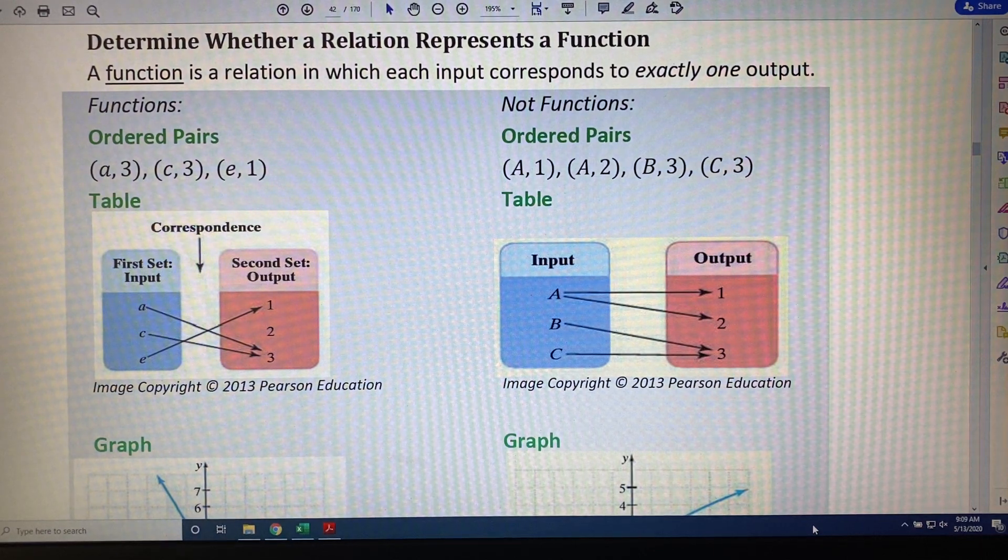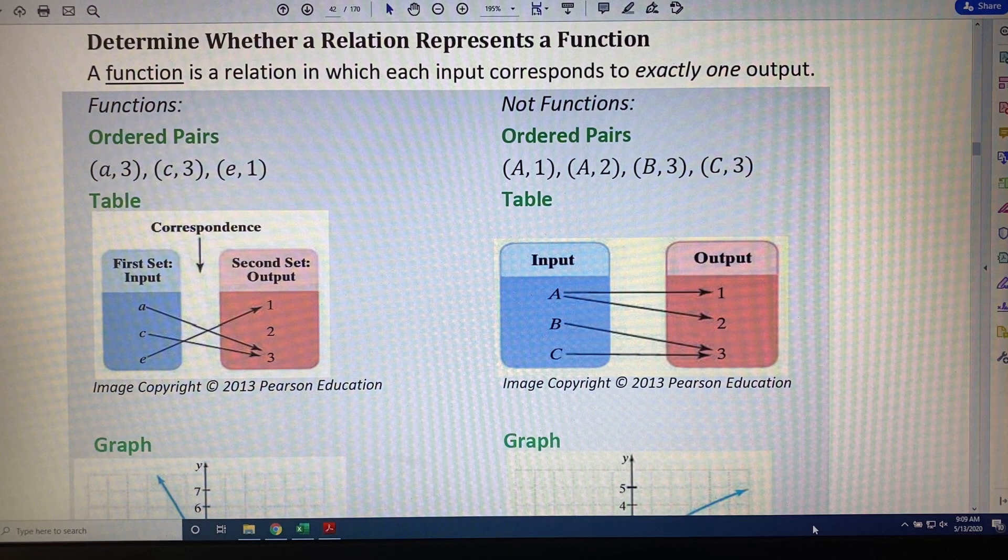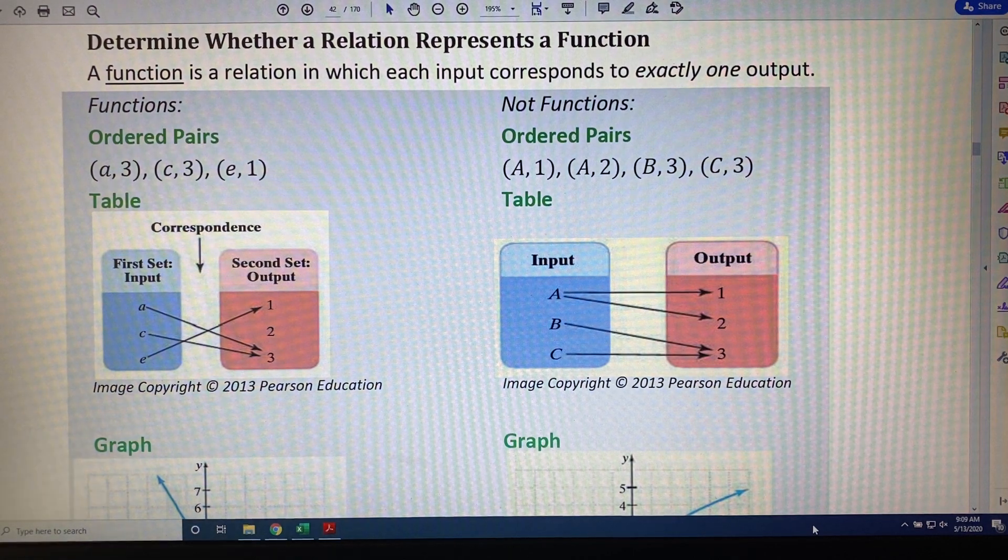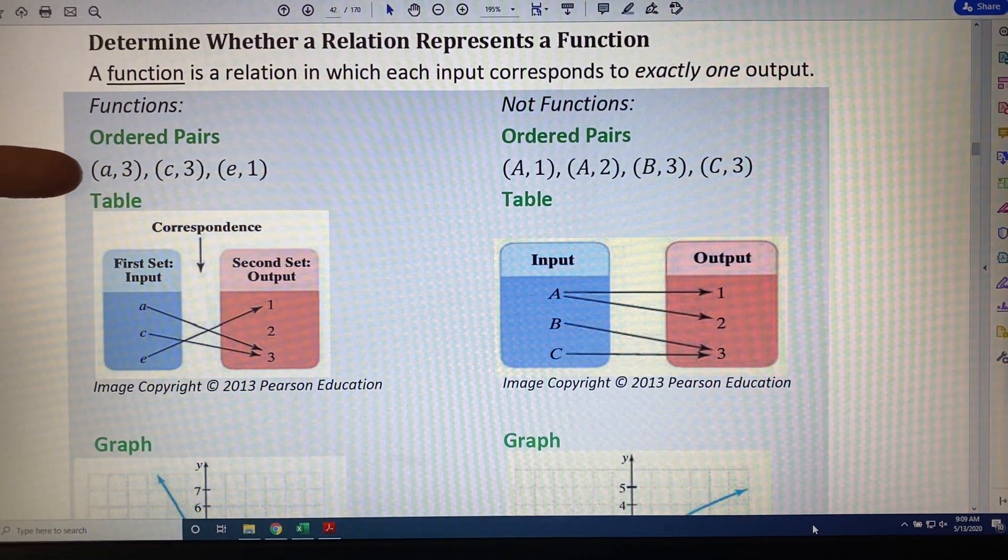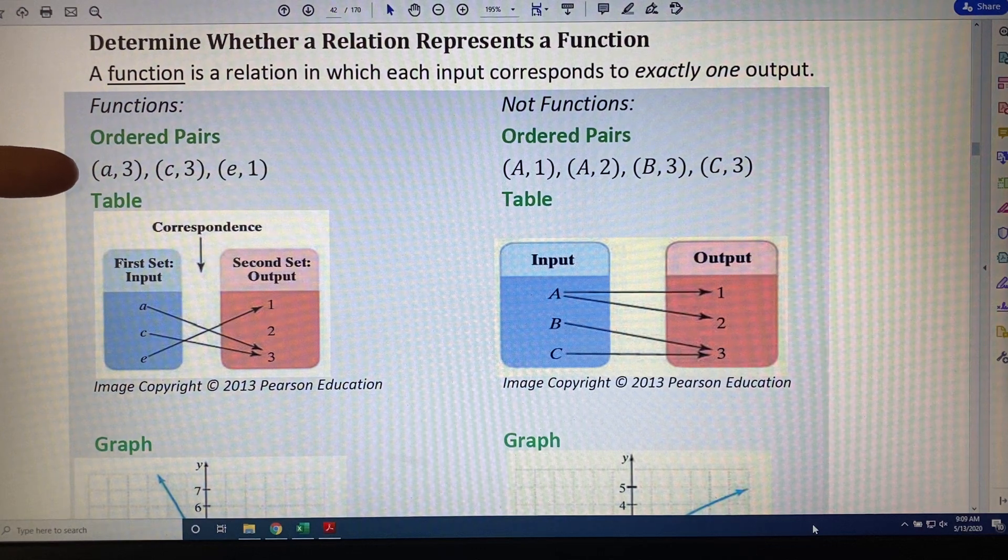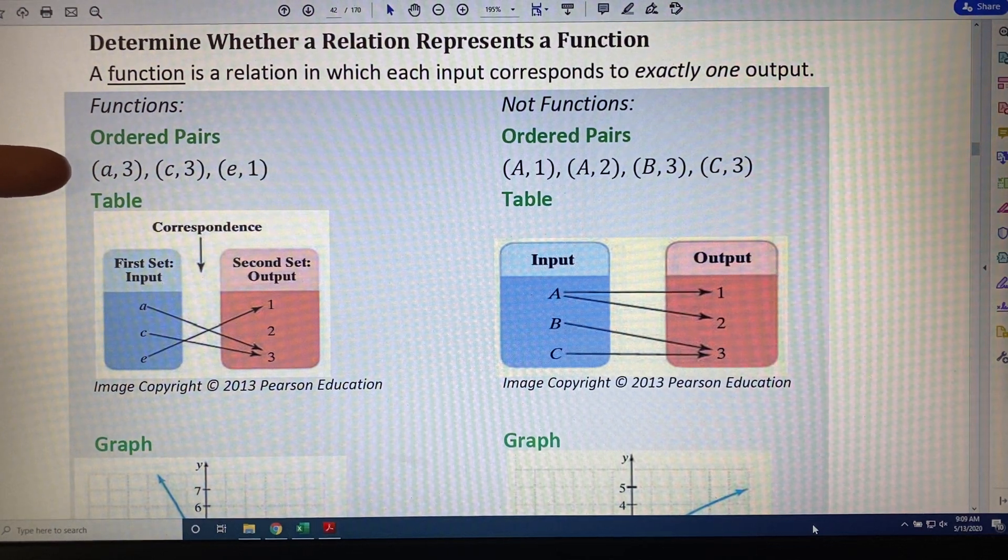All of the relations in the left column are functions. Let's look at the first one, ordered pairs. All right, so we have three points here: a, 3, c, 3, e, 1.